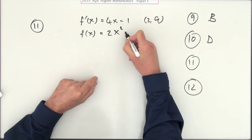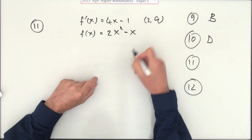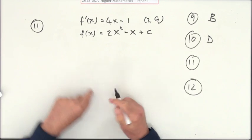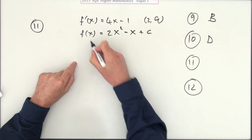Luckily, 4 divided by 2 is a nice 2, and 1 would have gone back up to the x term. But don't forget there might have been some constant. So this says, what would have been the equation of it?